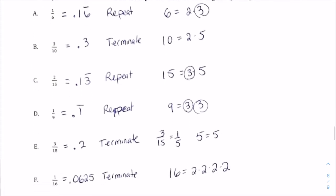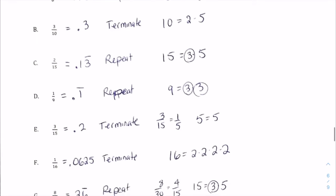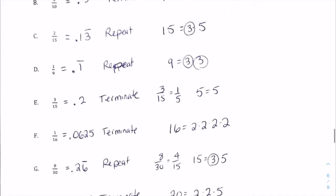Two fifteenths repeats — it's point one and then the threes repeat on and on. We put the bar just above the three to say that number is repeating, not the one. One ninth is point one repeating; the ones go on forever. Three fifteenths terminates — that's exactly point two. One sixteenth also terminates; it's a longer decimal but after the five it ends cleanly. Eight thirtieths is point two and then the six repeats. If you do this in your calculator, the last digit might be a seven because it's rounding up. One twentieth terminates.